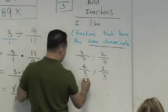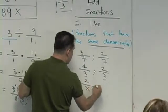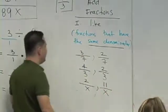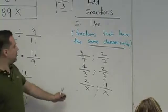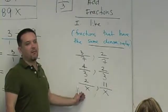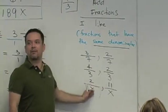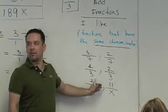How about this? Two over x and 11 over x. Are those like? Yeah, they have to have the same denominator. So they're also like.